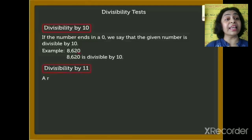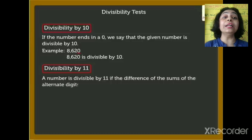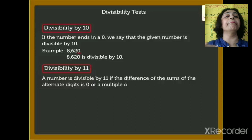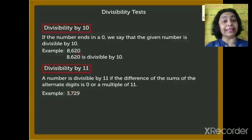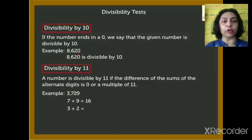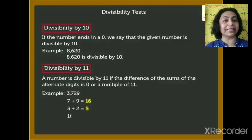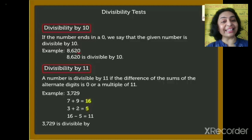Now, divisibility by 11. A number is divisible by 11 if the difference of the sums of the alternate digits is 0 or a multiple of 11. Example: 3729. Add digits at odd positions: 7 plus 9 gives 16. Add digits at even positions: 3 plus 2 gives 5. Subtract: 16 minus 5 is 11. Since 11 is a multiple of 11, we can say 3729 is divisible by 11.